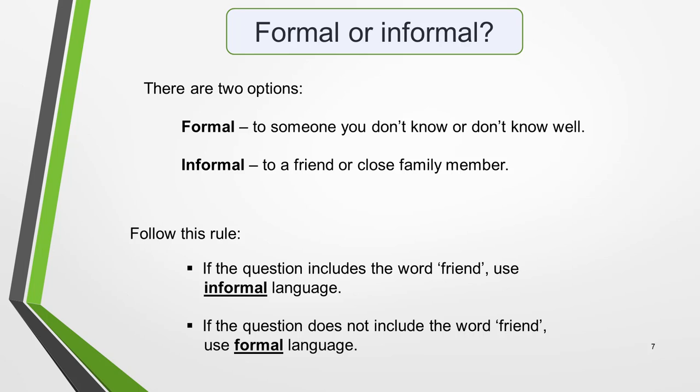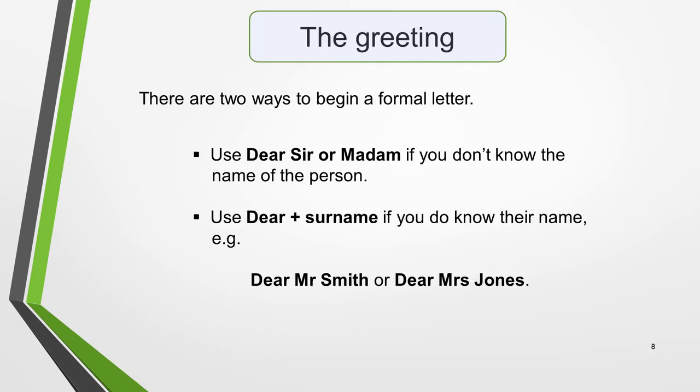Two parts of the letter that require very specific formal language are the greeting at the beginning and the sign-off at the end. There are two ways you can begin your formal letter of complaint. Use 'Dear Sir or Madam' if you don't know the name of the person you are writing to, or use 'Dear' and their surname if you do know their name — for example, Dear Mr. Smith or Dear Mrs. Jones. It's very likely that you would not know the name of someone you were making a complaint to, but if you want to use a surname, just make one up.